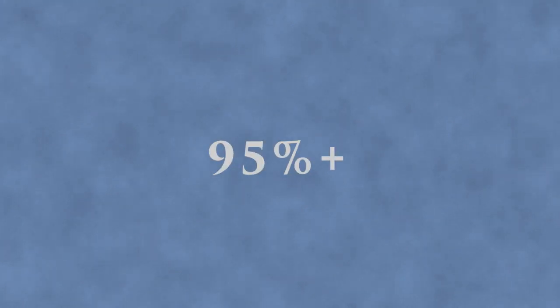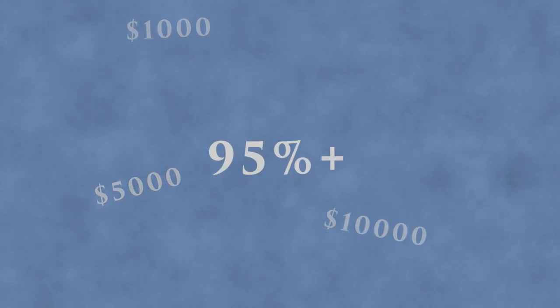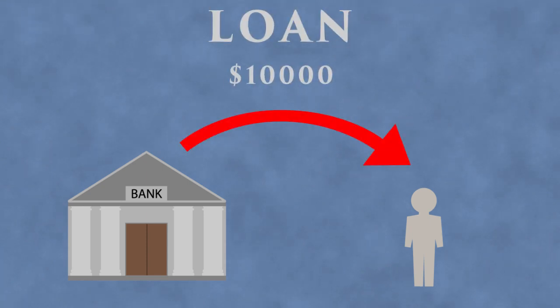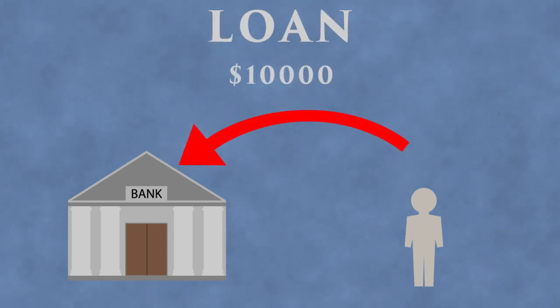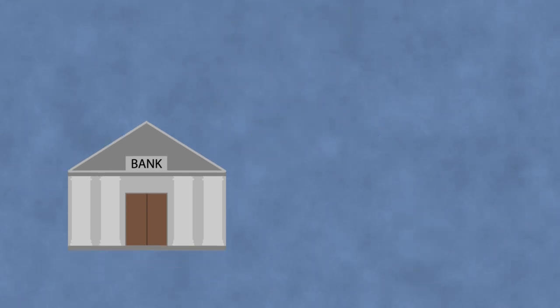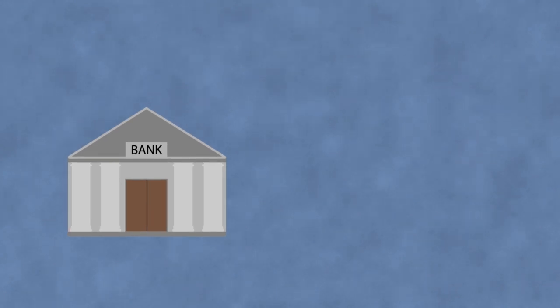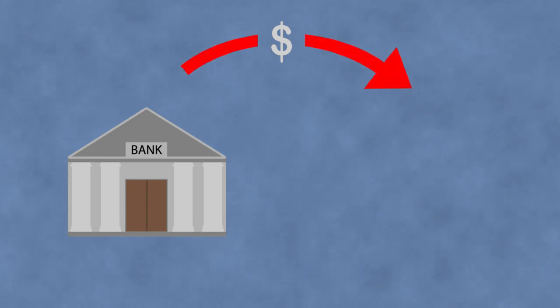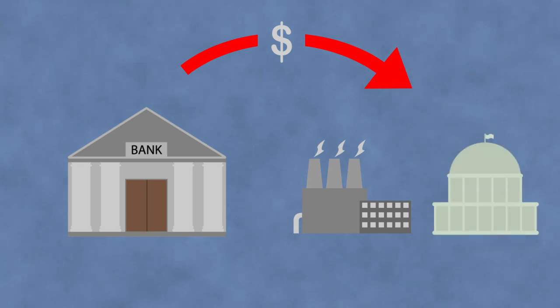First off, it must be understood that most of the money supply — 95% or more — exists in the form of intangible numbers or bank credit, instead of notes and coins. This bank credit is created every time a bank makes a loan or a purchase, and is destroyed every time a bank loan is paid down or a bank purchase is sold back to the public. The banking system with its system of money creation is the primary method for financing, directly or indirectly, the production of goods and services by businesses of all types, and even by governments.